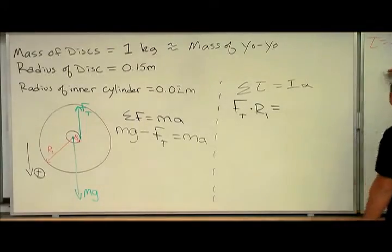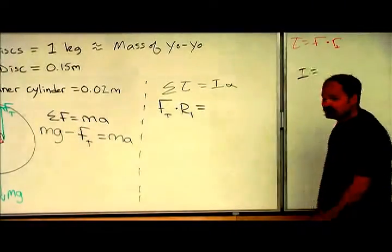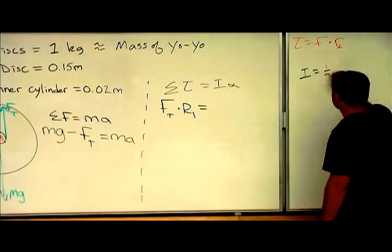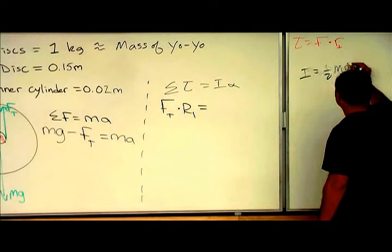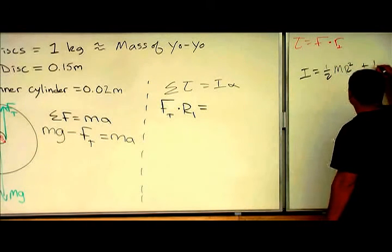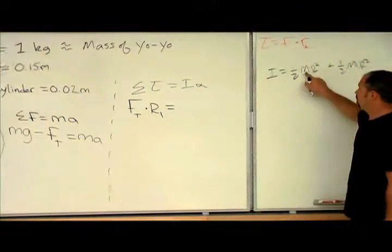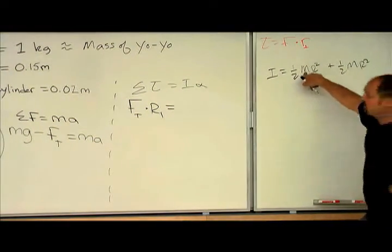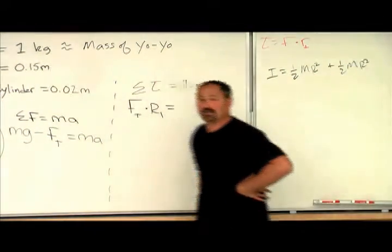Well, the moment of inertia of the yo-yo, it's comprised of two disks. Each disk has a formula, mr squared. Now, but this is the mass of each disk, which is half a kilogram.